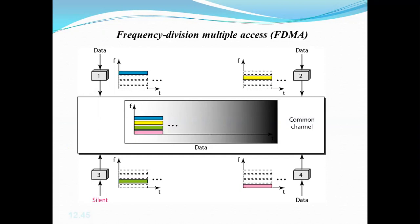There may be a problem with station interference, because all the different stations are using a single channel. Even though frequency bands are allocated to every station, there are chances of station interference. To prevent station interference, the allocated bands are separated from one another by small guard bands.